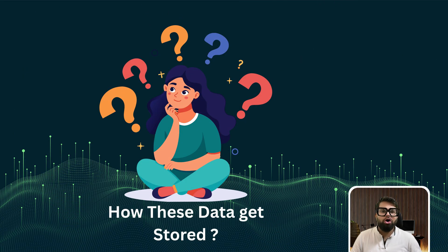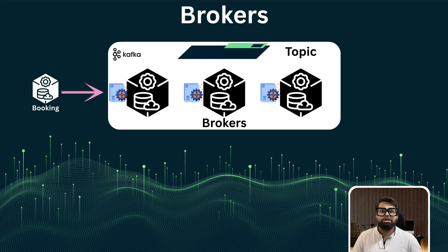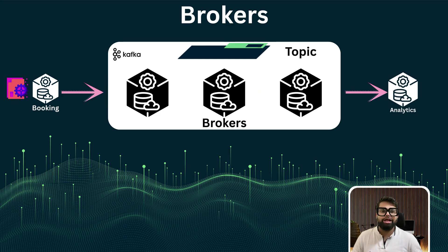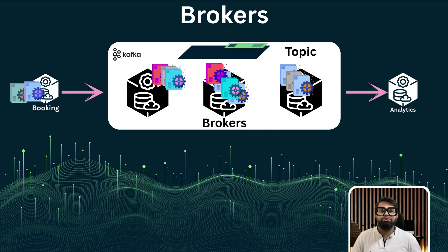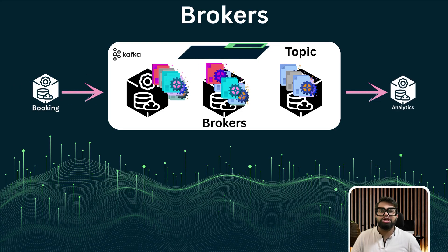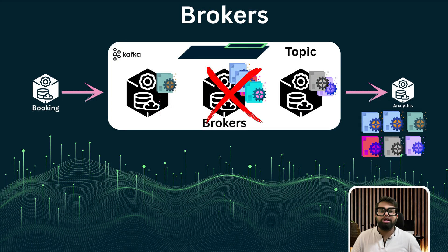We have talked a lot about events and topics, but where are these events actually stored? That's the job of a Kafka broker — a server that stores messages, handles requests from producers and consumers, and replicates data for fault tolerance. Every booking confirmation, availability update, payment, or message between host and guest gets saved to disk in one of the brokers. Even if one broker goes down, Kafka's replication ensures that data exists on another — just like keeping multiple copies of guest records in different regional data centers.